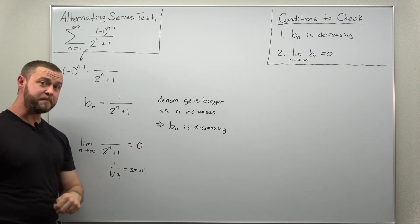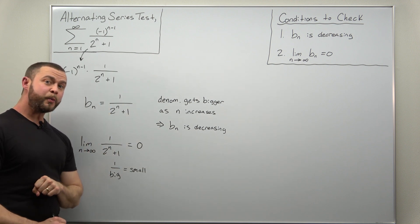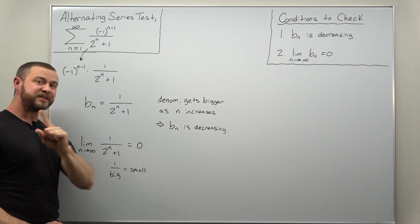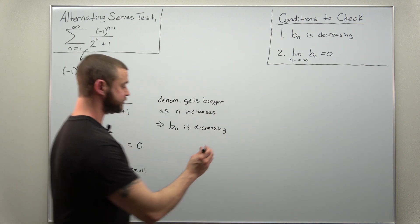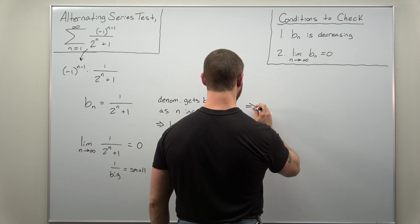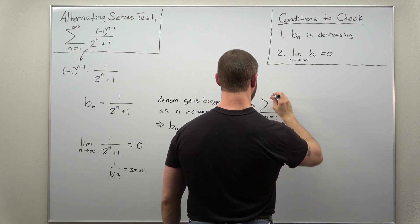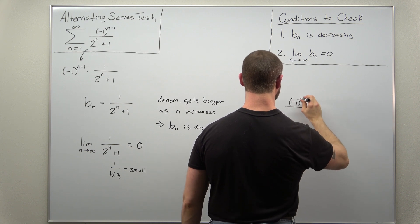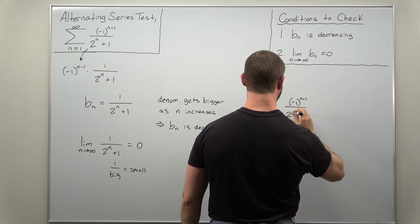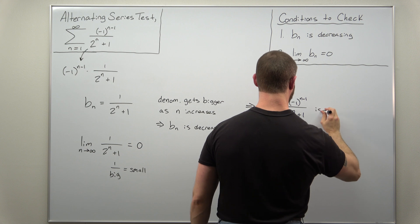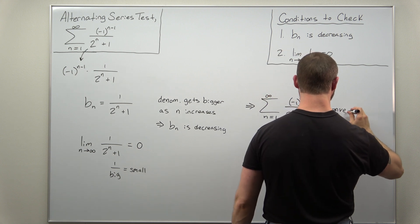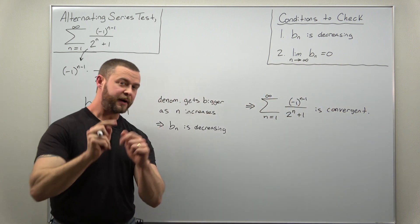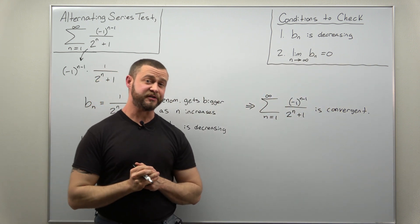So both of our conditions are met, and the conclusion we reach is that this alternating series is convergent. So we write that our infinite series, which is an alternating series, is convergent — and it's convergent by applying the alternating series test.